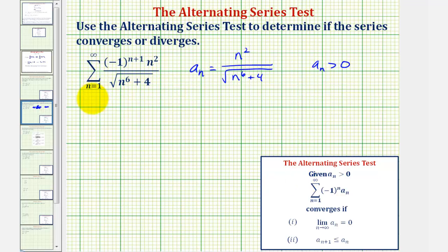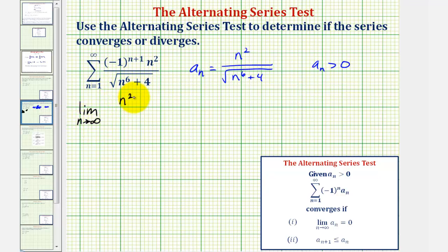Now we'll determine the limit as n approaches infinity of a sub n, which would be the limit as n approaches infinity of n squared divided by the square root of n to the sixth plus four.